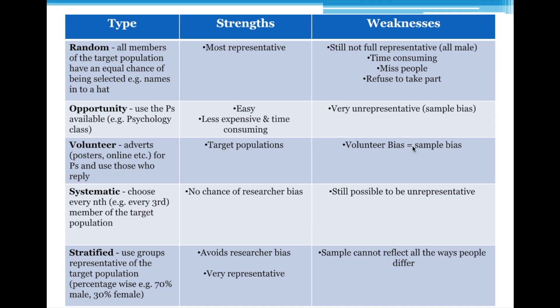However, you lose some representativeness and get volunteer bias. It takes a very special person to say they want to take part in a psychology experiment, that they've got time, and that they might not even be getting paid. So lots of people might not take part, meaning you're not testing the people you want to test. There's something about people who volunteer for studies that might make them different to others, making it hard to apply your findings.